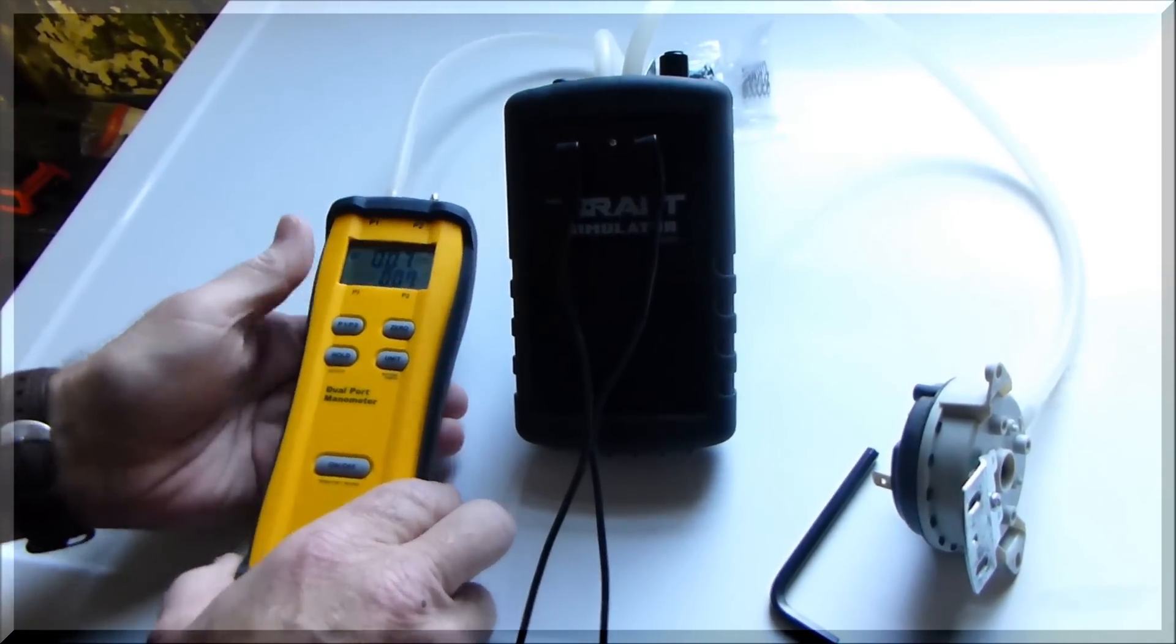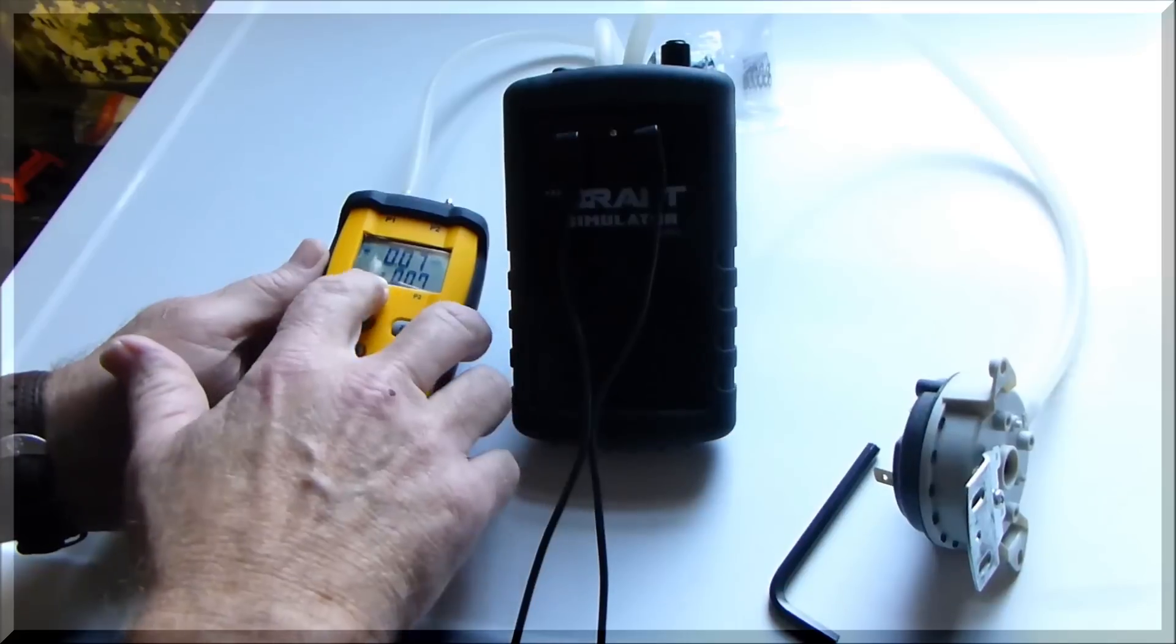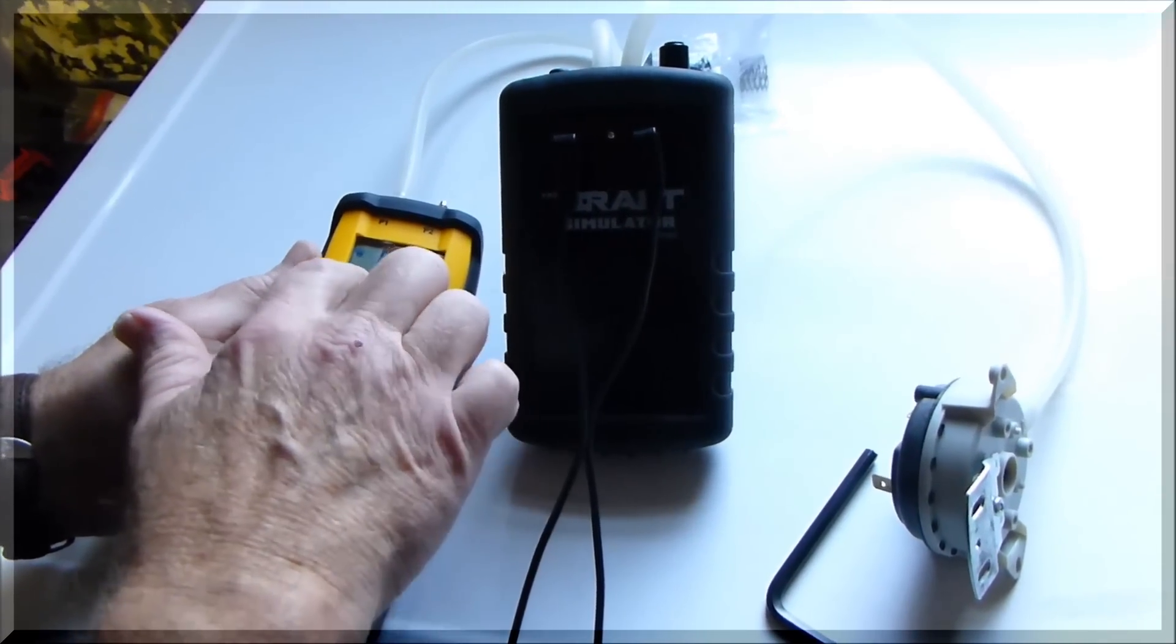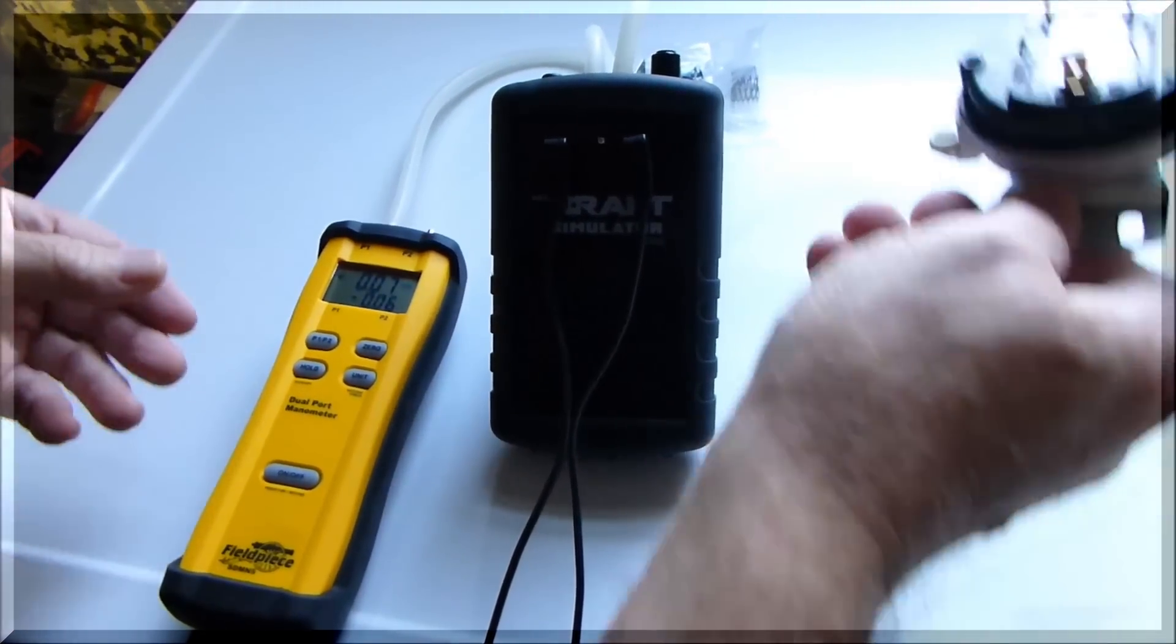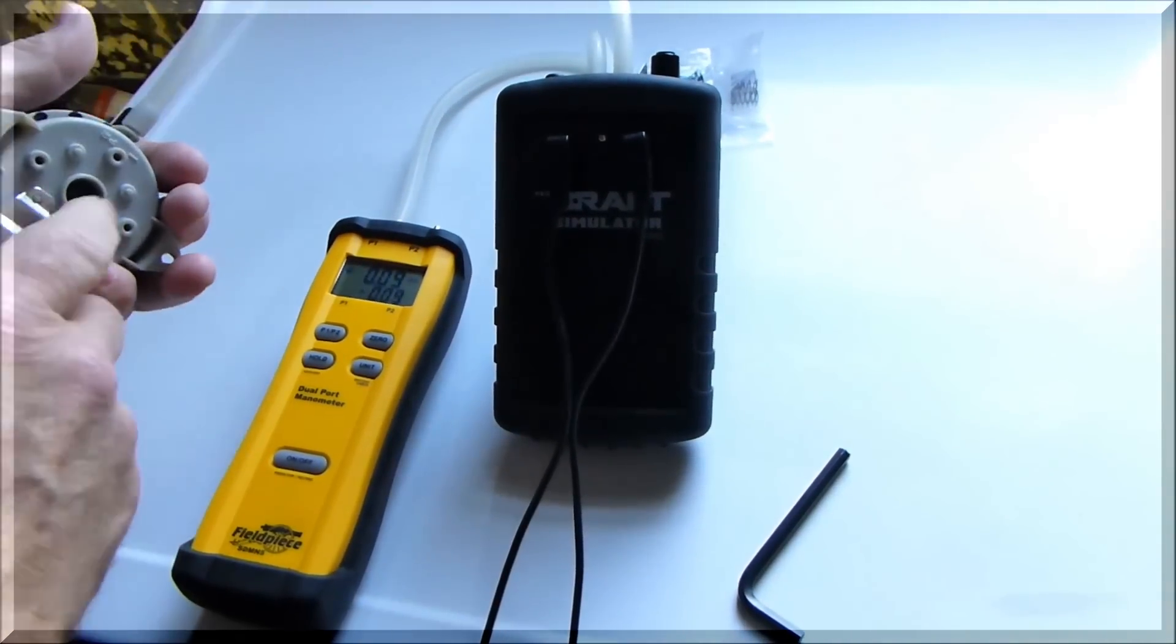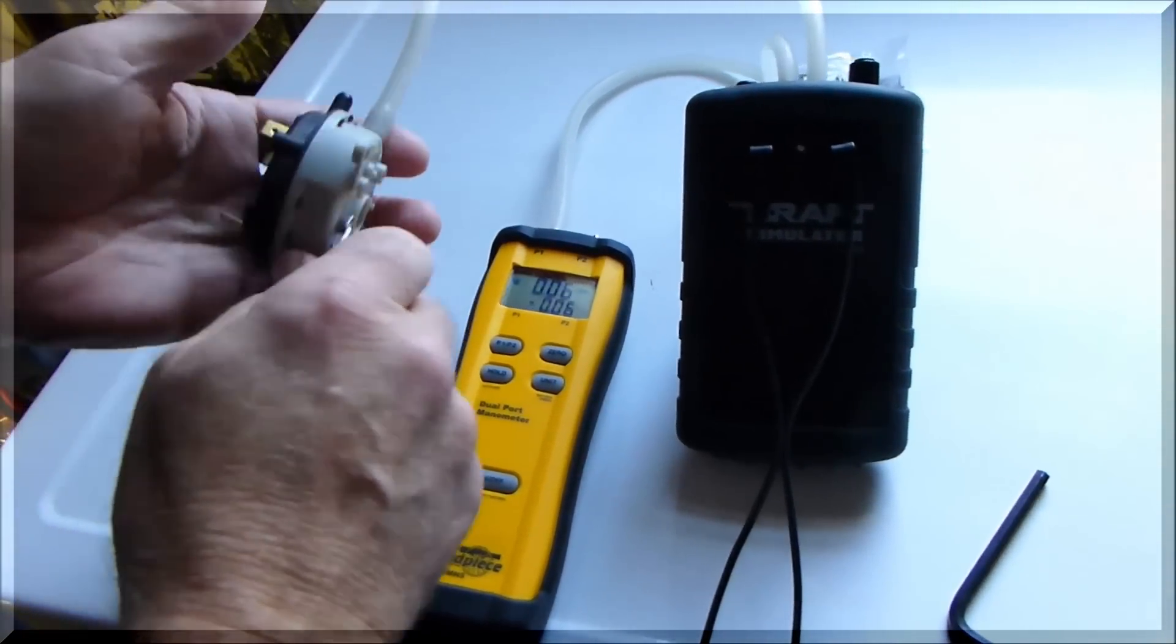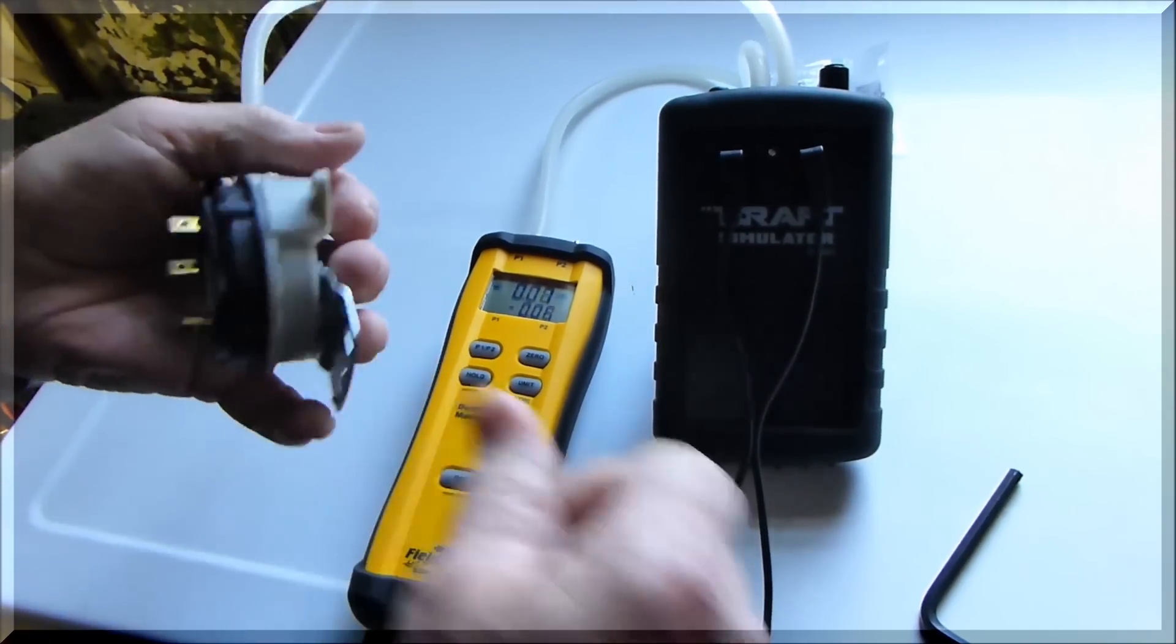This is pretty simple. We're going to pay attention to the manometer. We're looking at this lower column, which is negative pressure, and we're going to hold our pressure switch in the vertical position.